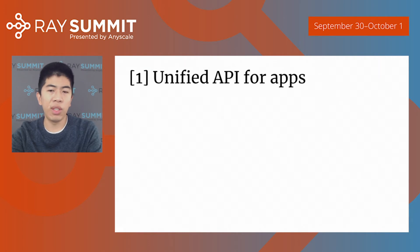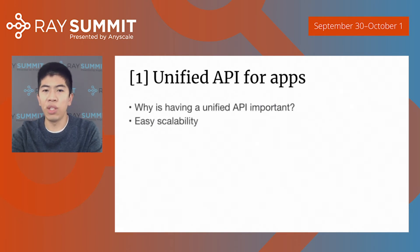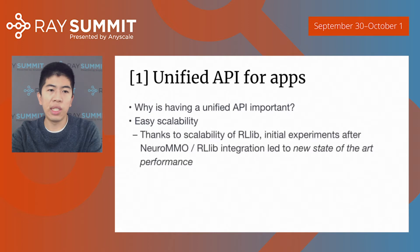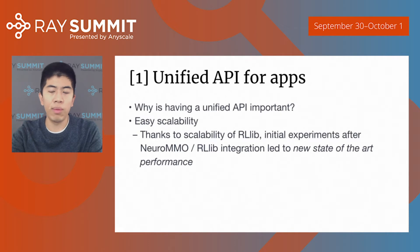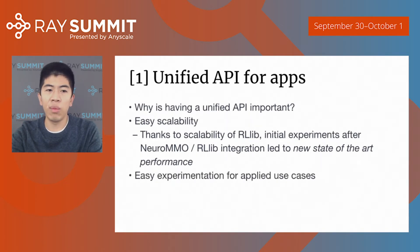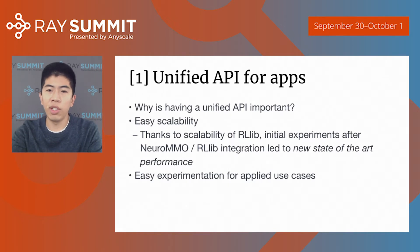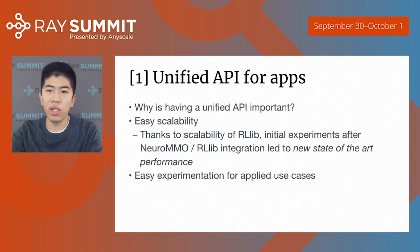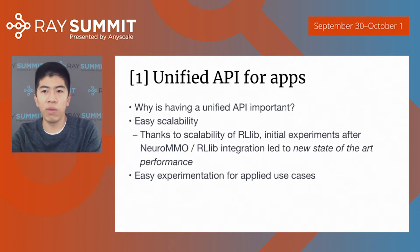So why is having a unified API important? First is easy scalability — any application that runs on RLib can automatically scale with Ray's distributed system. In fact, the NerroMMO authors found that right after integrating with RLib, they were able to get new state-of-the-art performance just through scale. A second reason is that a unified API allows easy experimentation for applied use cases, even if you don't need to scale. For an applied problem, you're experimenting with many different ways to express a problem in RL terms, and you want flexibility to tinker with different approaches — for example, multi-agent decompositions, different model types — all in one library without switching between different software frameworks.